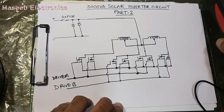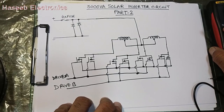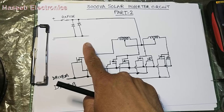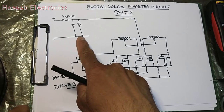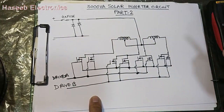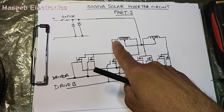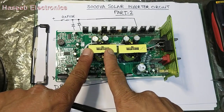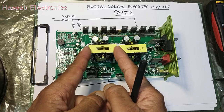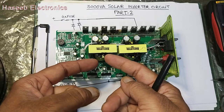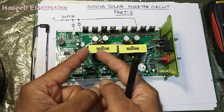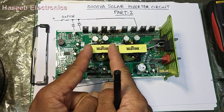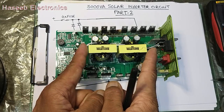This configuration is used because we need a high amount of current from the primary. If a single heavy, large-size transformer were used, it would cause very high primary current. So the current is divided between two primaries to handle the load.